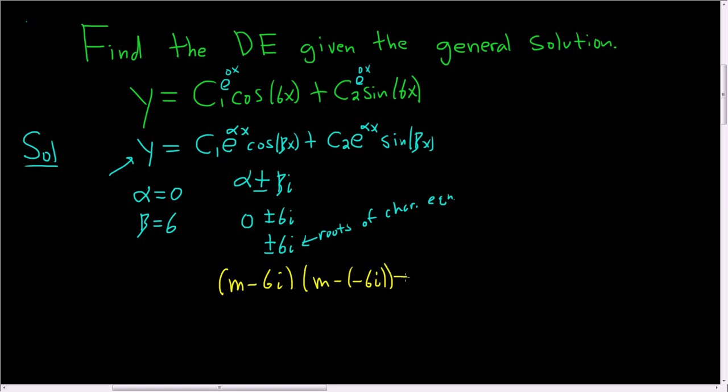So this is m minus 6i, m plus 6i, and this is equal to 0.